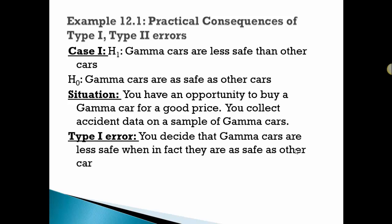You decide that the gamma cars—you make a Type I error—are less safe when, in fact, they're just as safe as any other car. Practical implication: you miss out on a bargain because you decide not to buy the car because you've concluded that the cars are less safe.